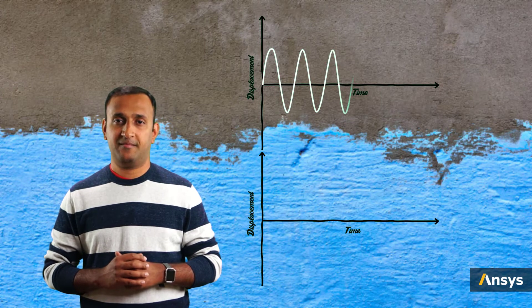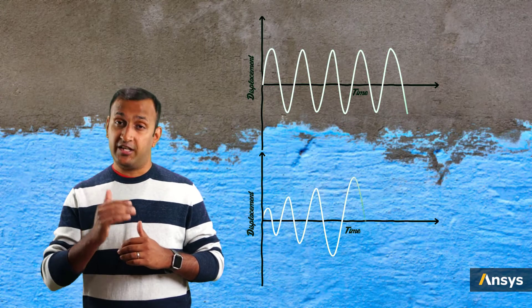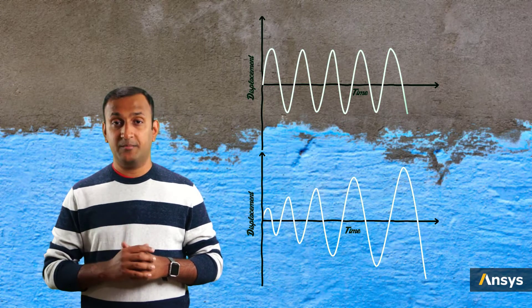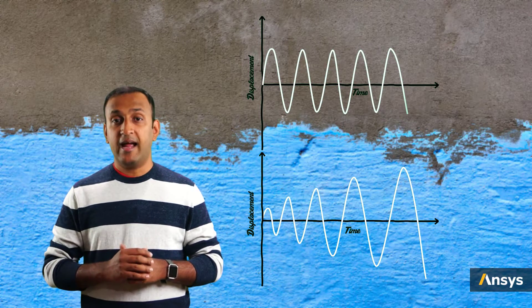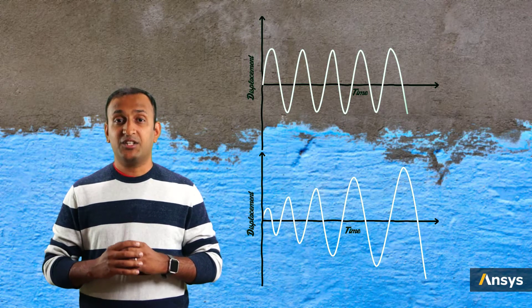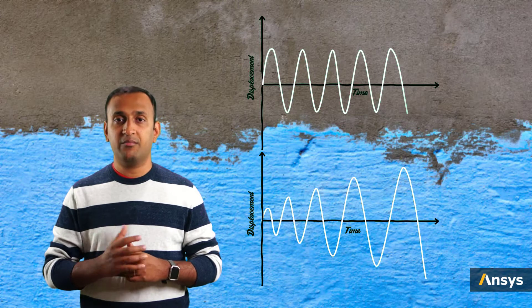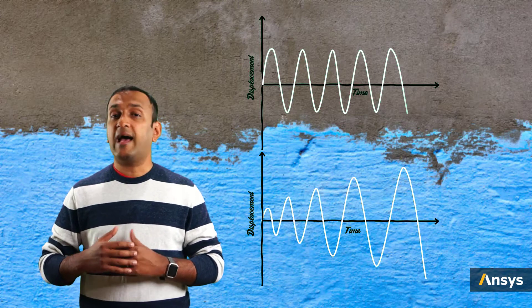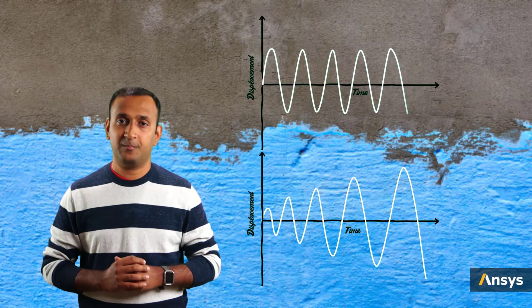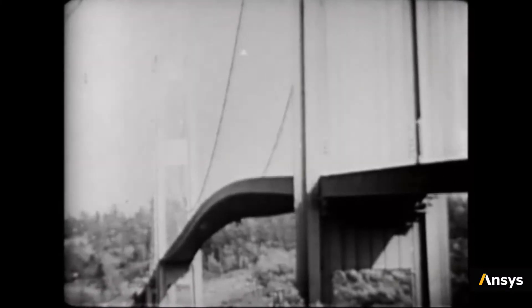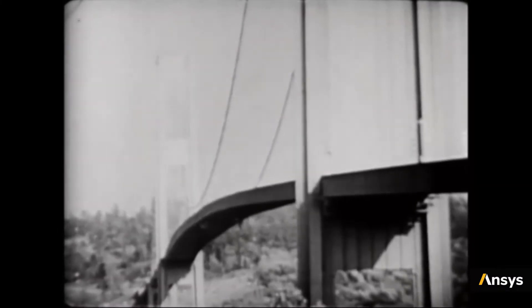Any further reduction in damping will set the system into self-oscillating mode. At this stage, the structure derives energy continuously from the loads even when they don't have any periodicity. This is the kind of instability that the Tacoma Narrows Bridge experienced before it collapsed.